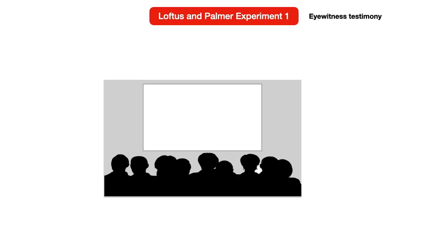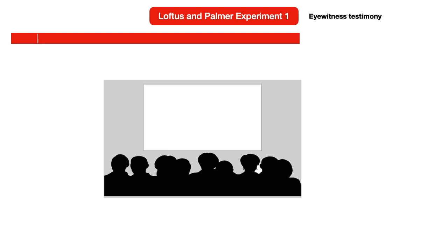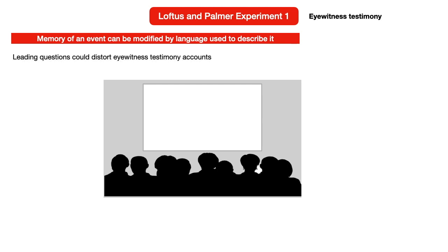Let's have a look at the first experiment. This experiment set out to prove that memory of an event can be modified by the language used to describe it. Loftus and Palmer gathered together 45 people and separated them into five equal groups of nine people each, and they were taken into separate rooms.